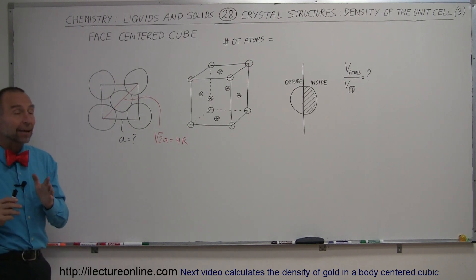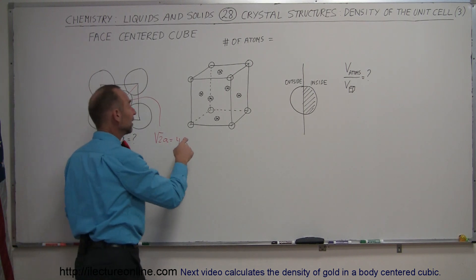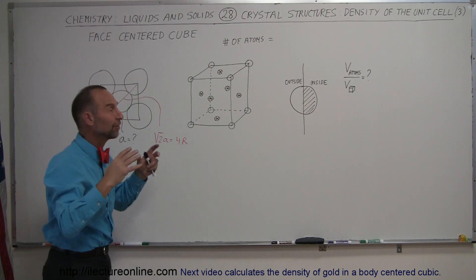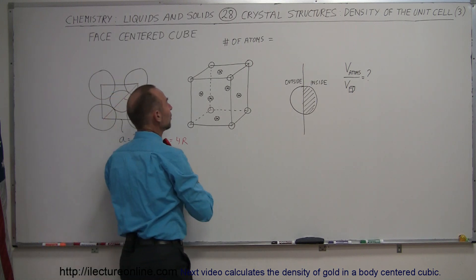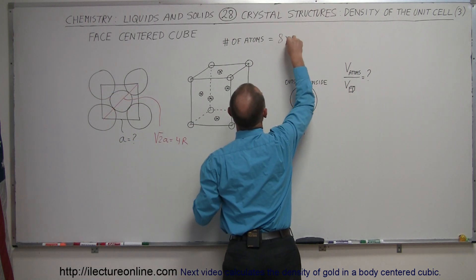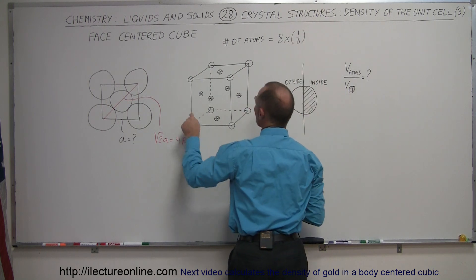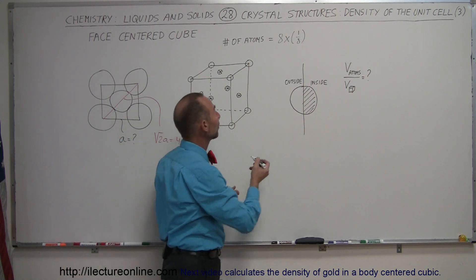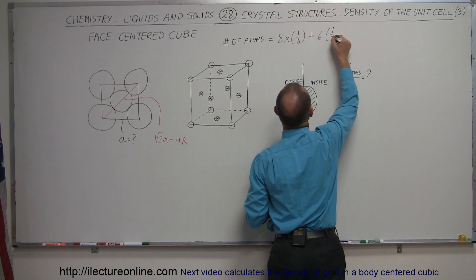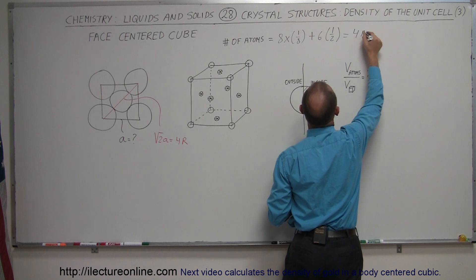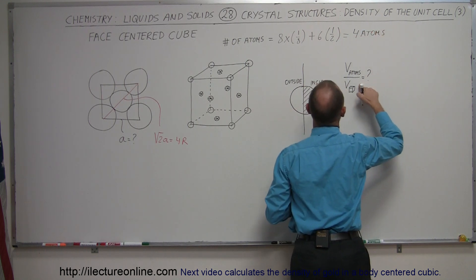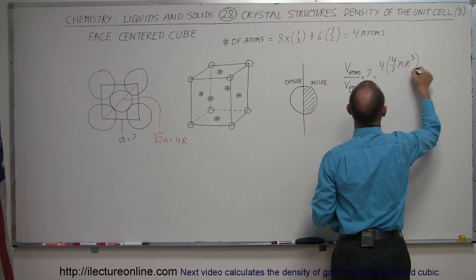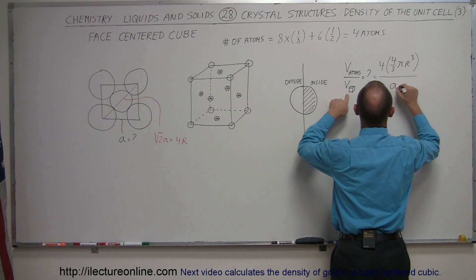We also need to determine how many atoms are in one unit cell. We still have one-eighth of an atom at each of the eight corners belonging to the cube, so that's 8 × 1/8 = 1 atom from the corners. We also have six face atoms, each contributing one-half, so that's 6 × 1/2 = 3. In total, there are four atoms in the cube, so the volume of atoms is 4 × (4/3)πr³, divided by the volume of the cube, a³.